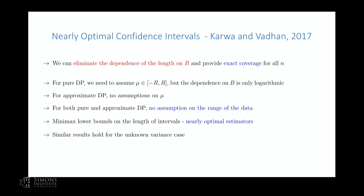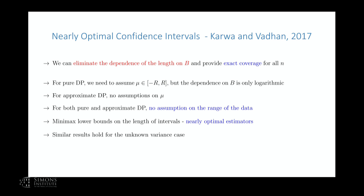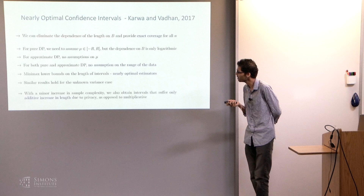With some minor increase in sample complexity, we also obtain intervals that suffer only an additive increase in length instead of a multiplicative increase. If you remember, there was a constant factor multiplying the first term of the confidence interval — we are able to get rid of that constant factor as well. It's all about constants in this talk.